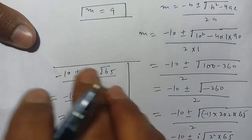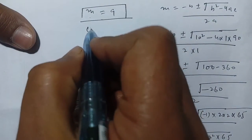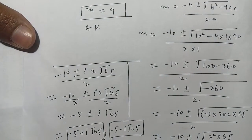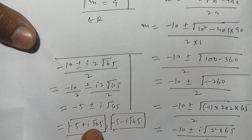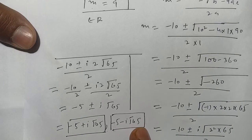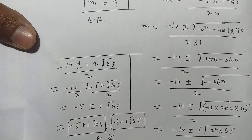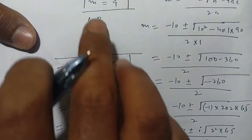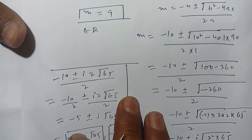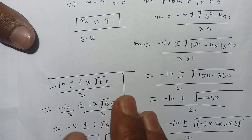Thus the roots of this equation are: m = 9, which belongs to the real numbers, and m = -5 ± i√65, which belong to the complex numbers. There are three roots in total. If you are new here, you can subscribe to our channel for more math videos.